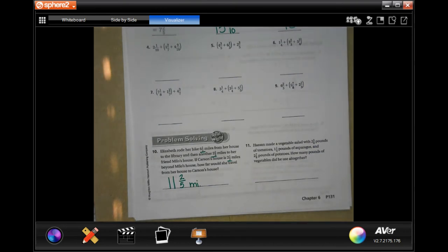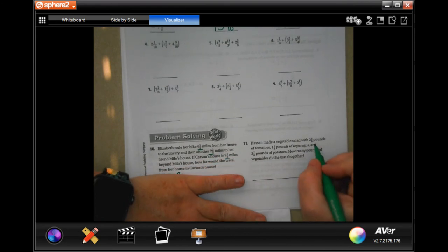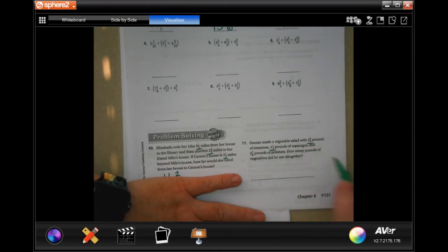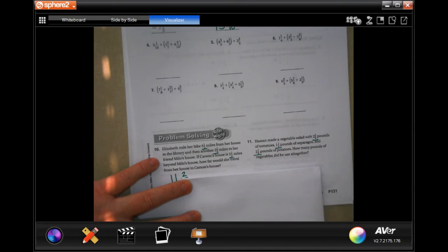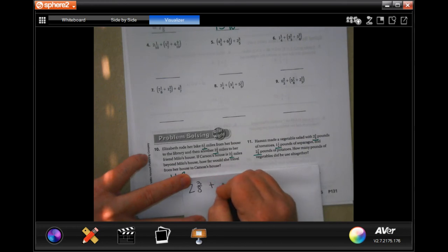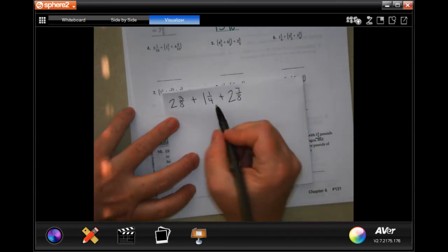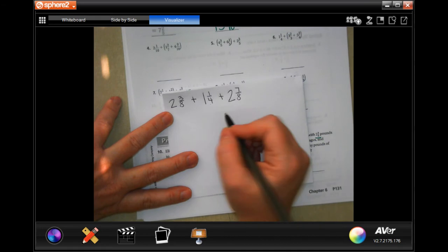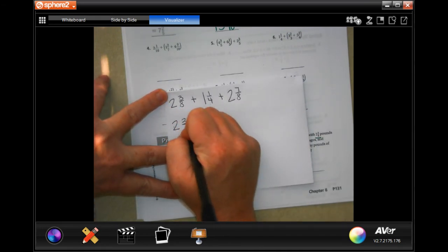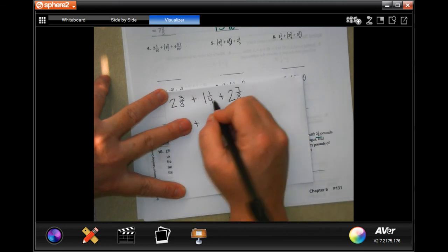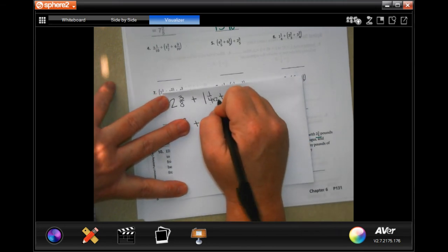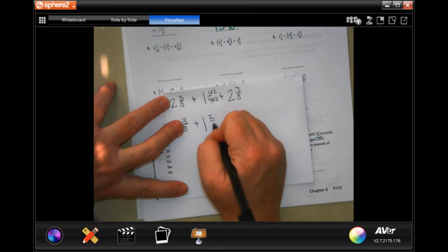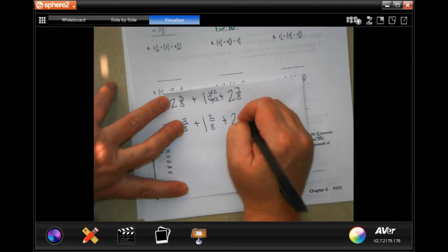Last one like these, guys. We're going to make it. Don't worry. Son made a vegetable salad with 2 and 3 eighths pounds of tomatoes, 1 and a quarter pounds of asparagus, and 2 and 7 eighths pounds of potatoes. How many pounds of vegetables did he use all together? Well, so we have 2 and 3 eighths plus 1 and 1 fourths plus 2 and 7 eighths. So, between 4 and 8, my denominator is going to be 8. So, I'm going to have 2 and 3 eighths, because that's not going to change. To multiply, or to get to 8, I have to multiply the 4 by 2, so I need to multiply the top by 2. So, I'm going to have 1 and 2 eighths plus 2 and 7 eighths, because that won't change.